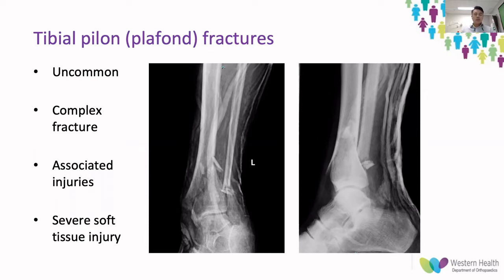A pylon fracture not only involves the metaphysis and the articular surface, but what makes a pylon special and unique is that it has a significant soft tissue component to the injury as well. This is what makes this particular fracture such a hard injury to treat.